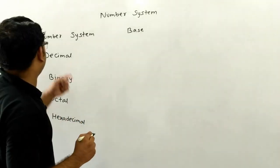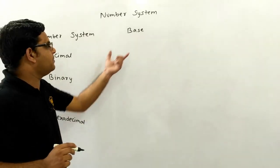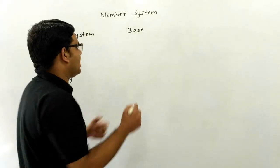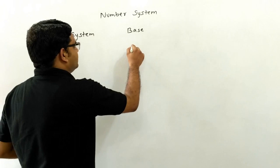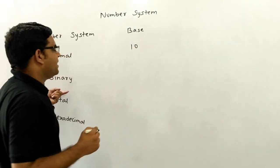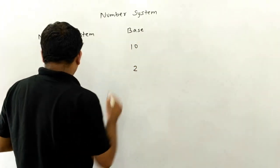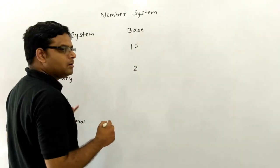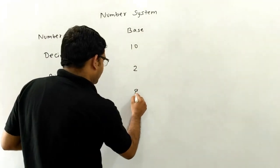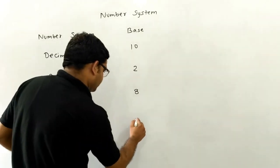So the decimal number system has base 10. Why is it 10? I will tell you in just a moment. Now binary has base 2, octal means eight so its base is eight, and hexadecimal has base 16.